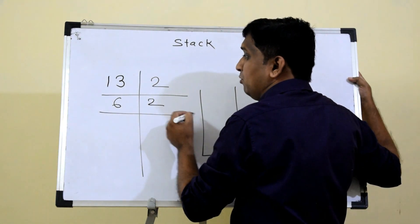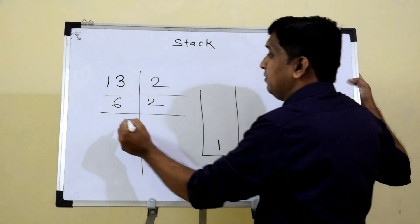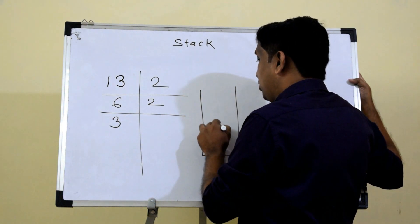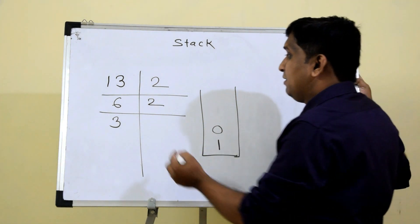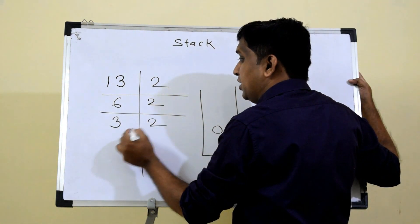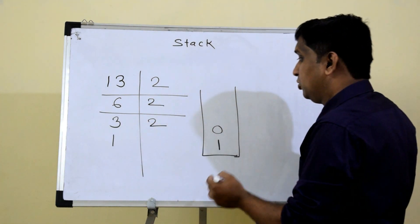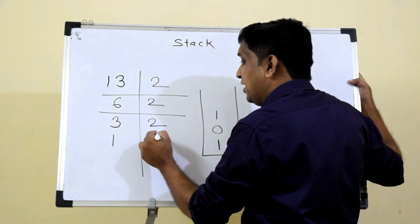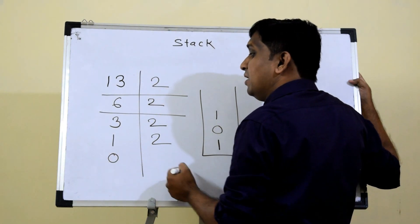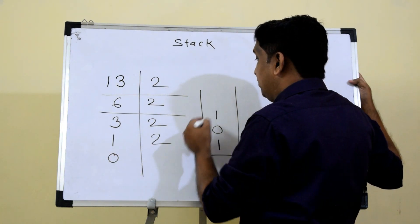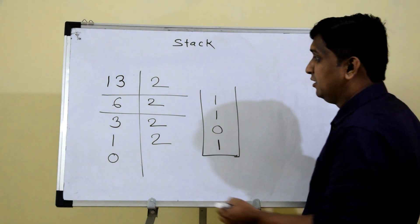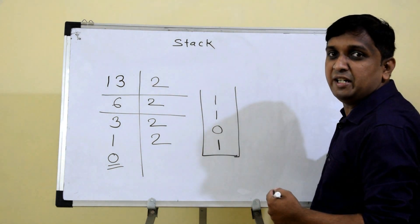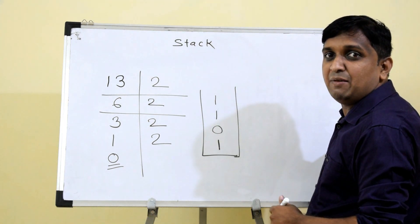Again I divide 6 by 2: quotient is 3, remainder is 0 — push onto the stack. Divide 3 by 2: quotient is 1, remainder is 1 — push onto the stack. Divide 1 by 2: quotient is 0, remainder is 1 — push onto the stack. Now the number has become 0, so I stop.